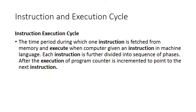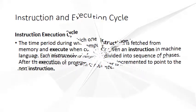Instruction and execution cycle. The instruction execution cycle is the period during which an instruction is fetched from memory and executed. When a computer is given an instruction, it's usually divided into a sequence of phases. After the execution of the instruction, the program counter is incremented to point to the next instruction. This means the computer is available and ready for your next instruction. Your instruction is usually inputted by the user in human language and is then converted into machine language, also known as binaries, which are ones and zeros.